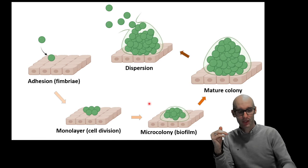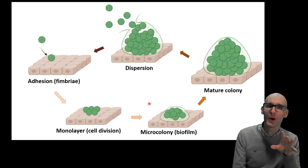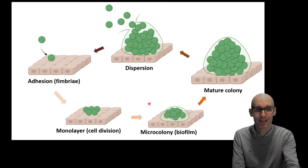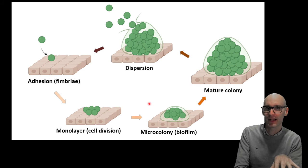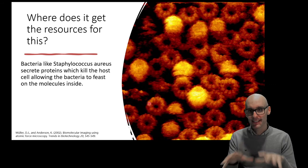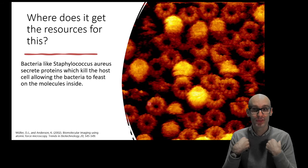So where is this being a disease? Where do they get the nutrients to do that cell division, to create that biofilm, to expand and become what they are? We know they're heterotrophs, so they're getting their nutrients from us. How do they get it from us? Because they're not inside the cell like chlamydia. Bacteria like Staphylococcus aureus secrete proteins which kill our host cells, allowing the bacteria essentially to feast on the molecules inside.